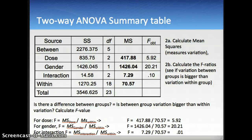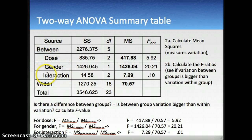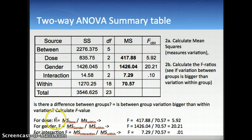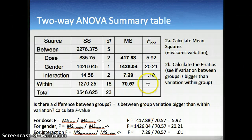Based on this, we can compute the ANOVA table. We get a within-groups mean square of 70.57. For the interaction, the sums of squares of 14.5 divided by 2 gives a mean square of 7.29. For gender, 1426 divided by 1 gives a mean square of 1426. For dose, 835 divided by 2 gives a mean square of 417. The F value for dose is 417 divided by 70.57, which equals 5.92.